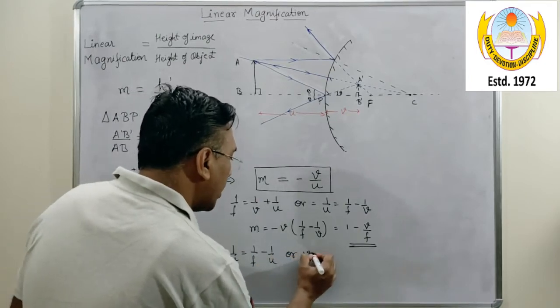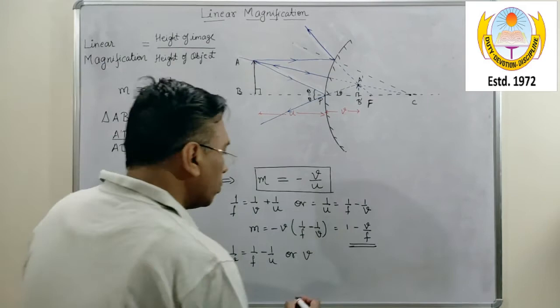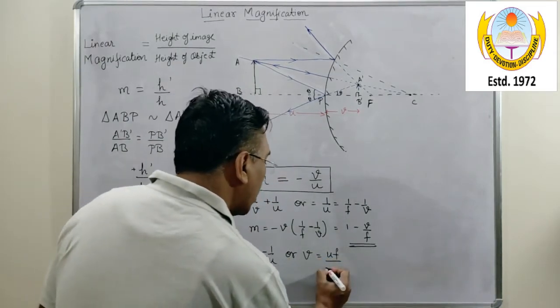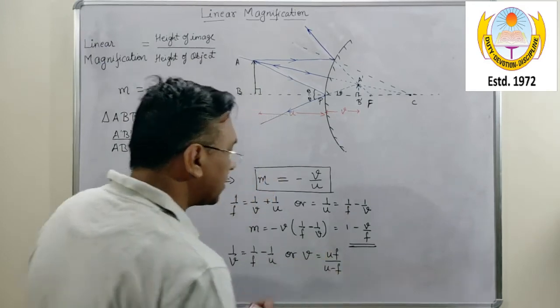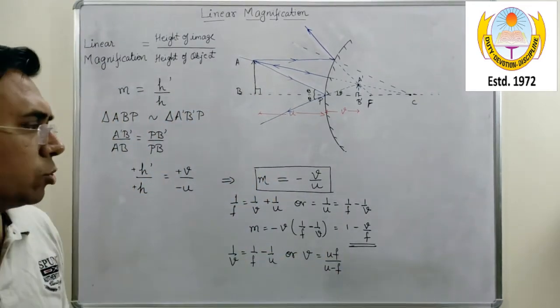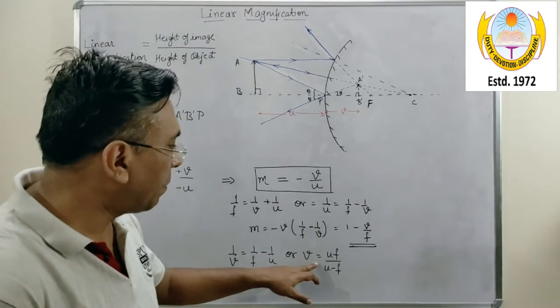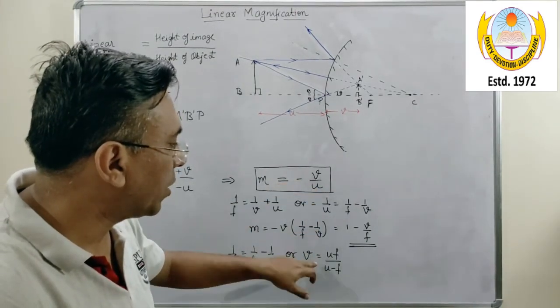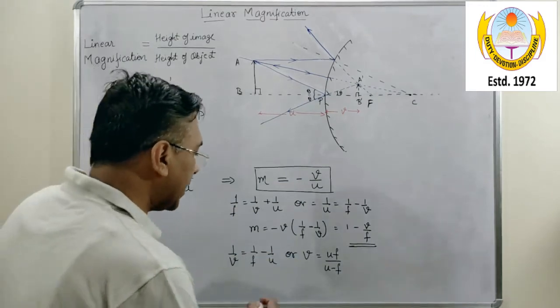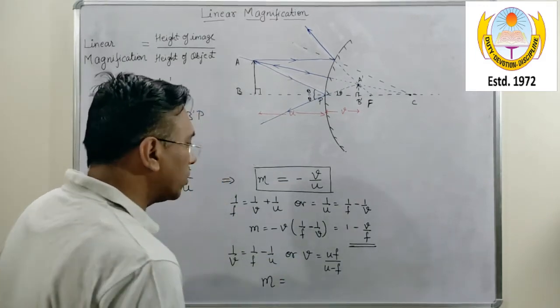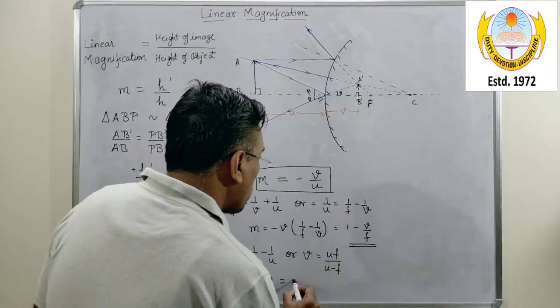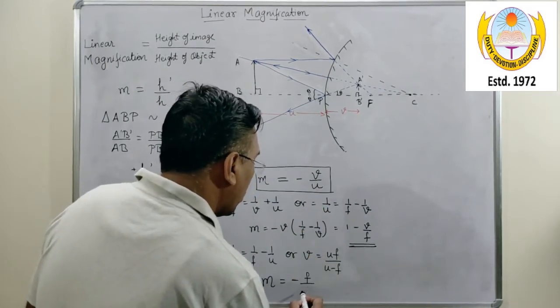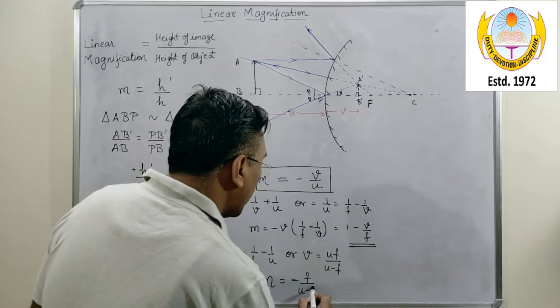Or I can write V equals to FU upon U minus F. When I solve this I get V equals to FU upon U minus F. Now simply if I replace the value of V in the magnification formula minus V by U with this term, I get M equals to minus F upon U minus F.